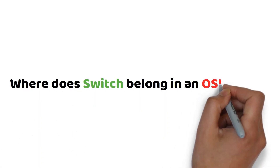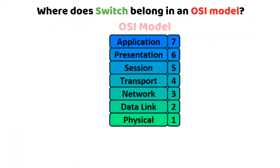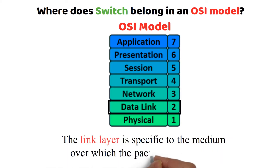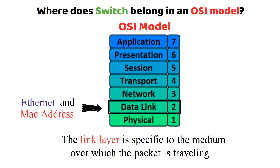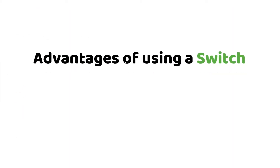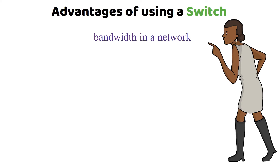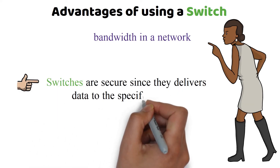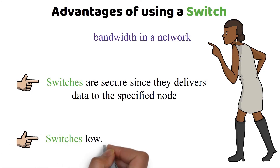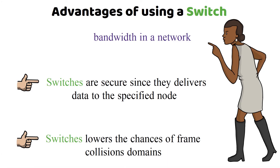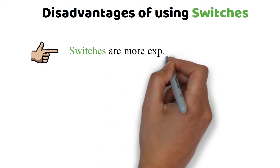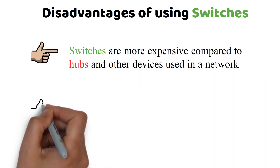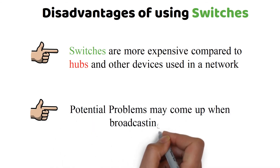Where does a switch belong in the OSI model? A switch is located on the OSI model's data link layer, i.e., the second layer. The link layer is specific to the medium over which the packet is traveling, and Ethernet and MAC addresses are part of this layer. Advantages: Switches increase bandwidth, are secure since they deliver data to the specified node, and lower the chance of frame collision domains. Disadvantages: Switches are more expensive compared to hubs, and potential problems may come up when broadcasting traffic.